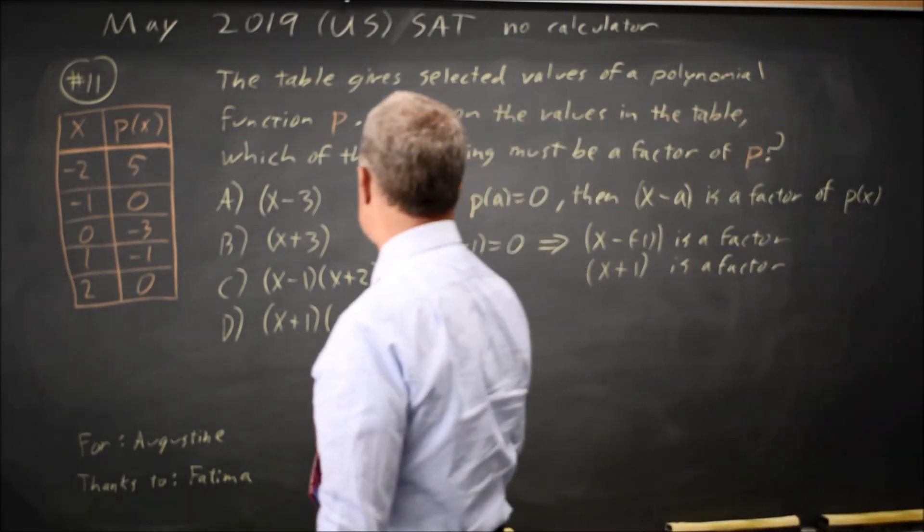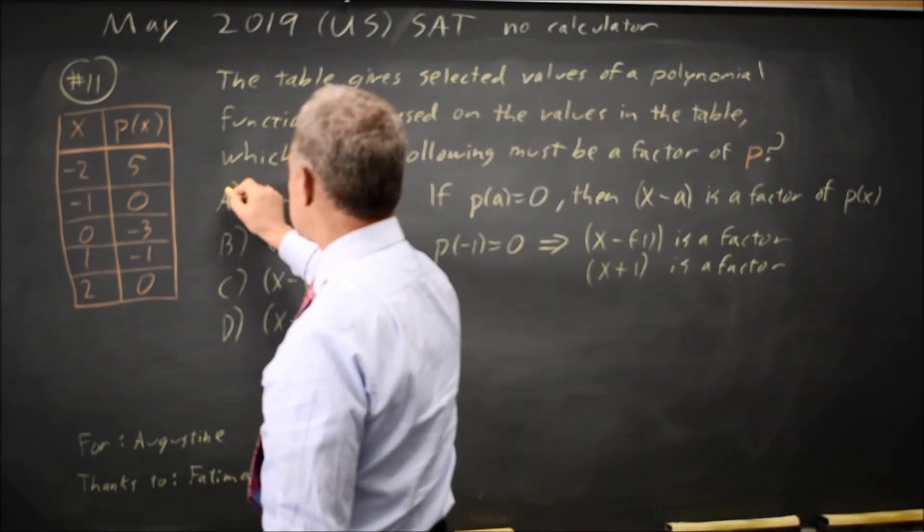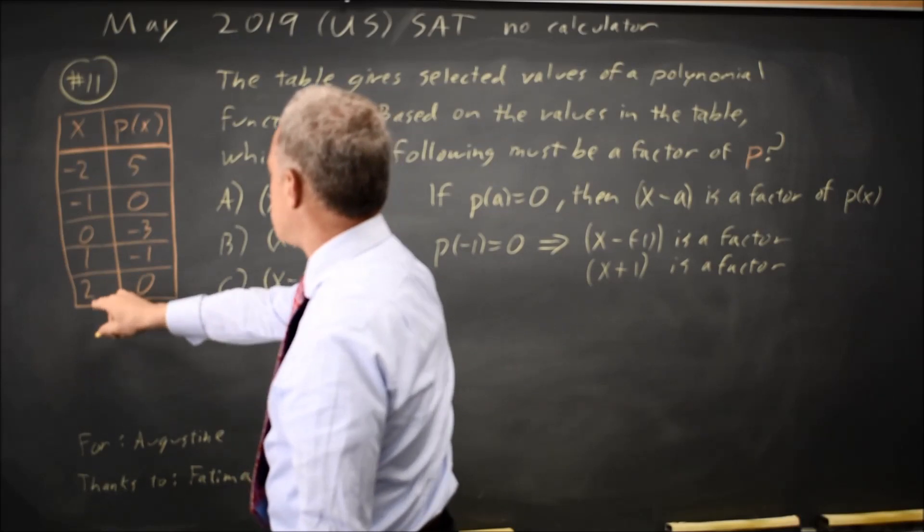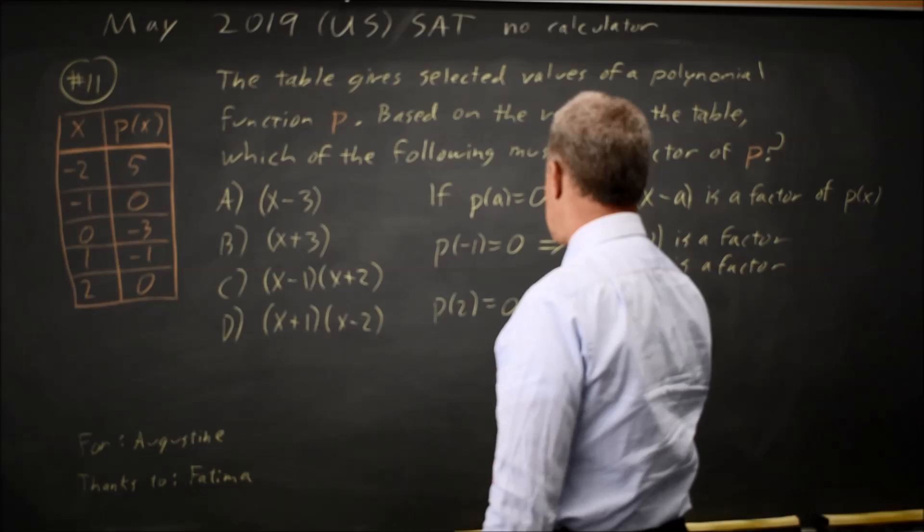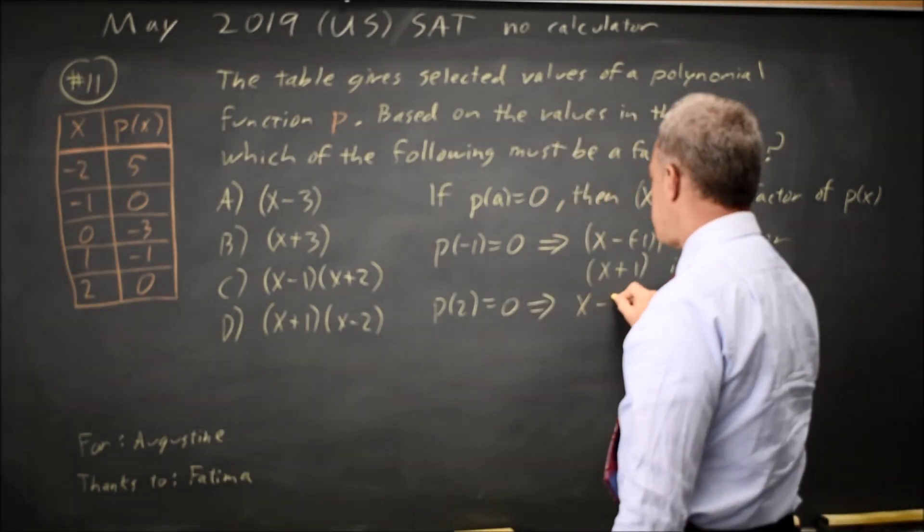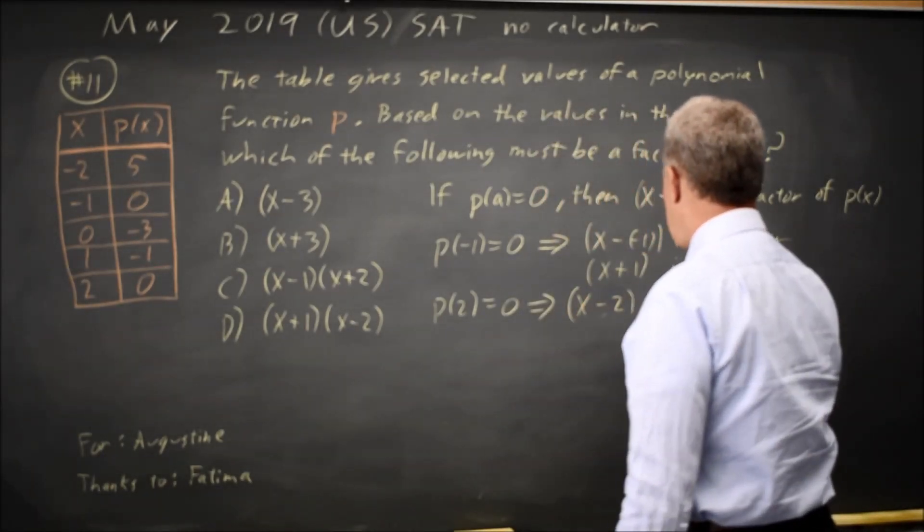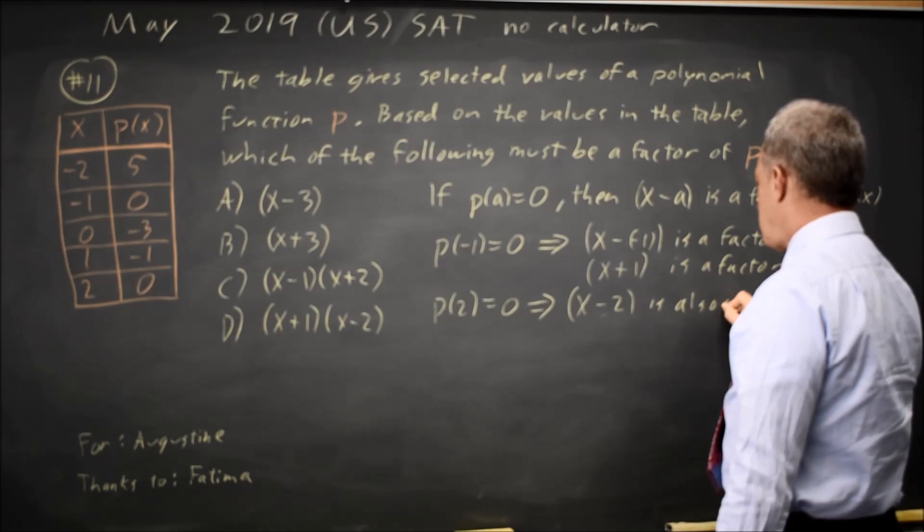Also, I could stop there, perhaps. But let's continue. P of 2 equals 0, so I can conclude X minus 2 is also a factor.